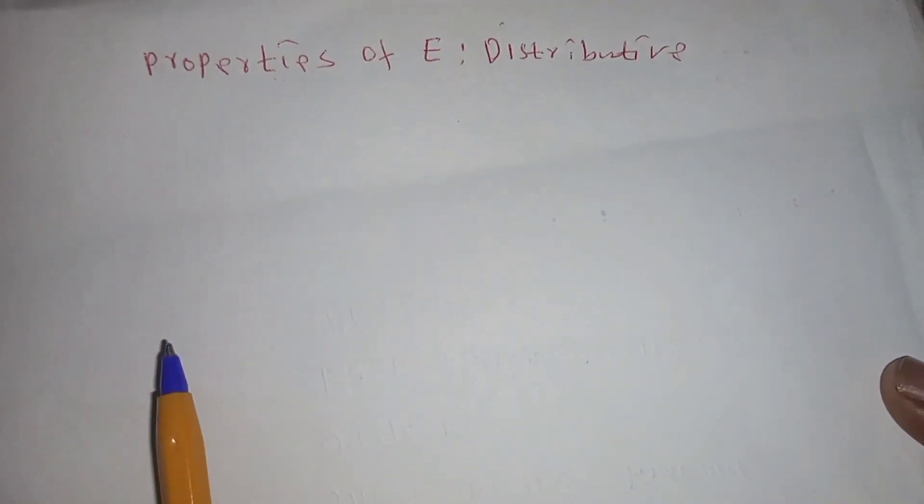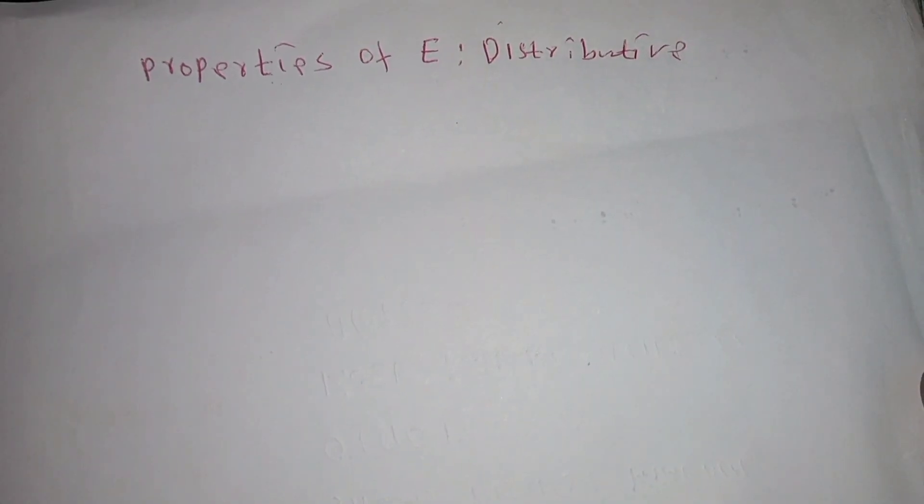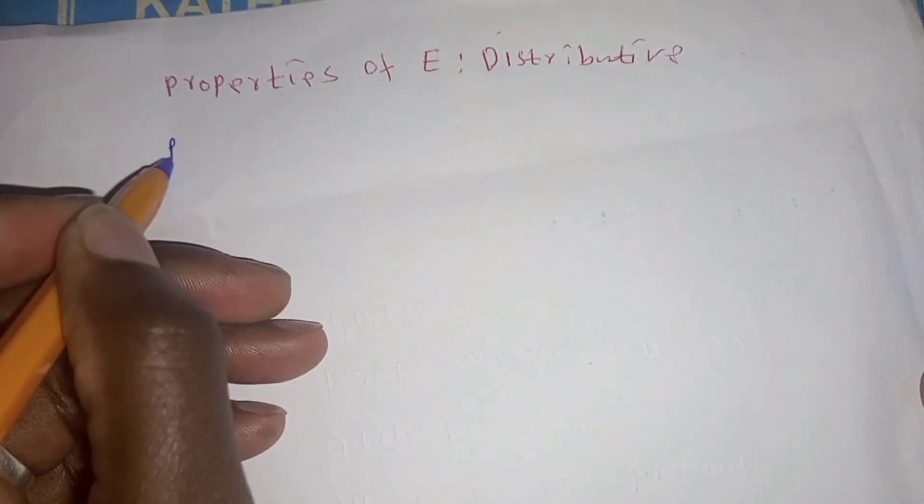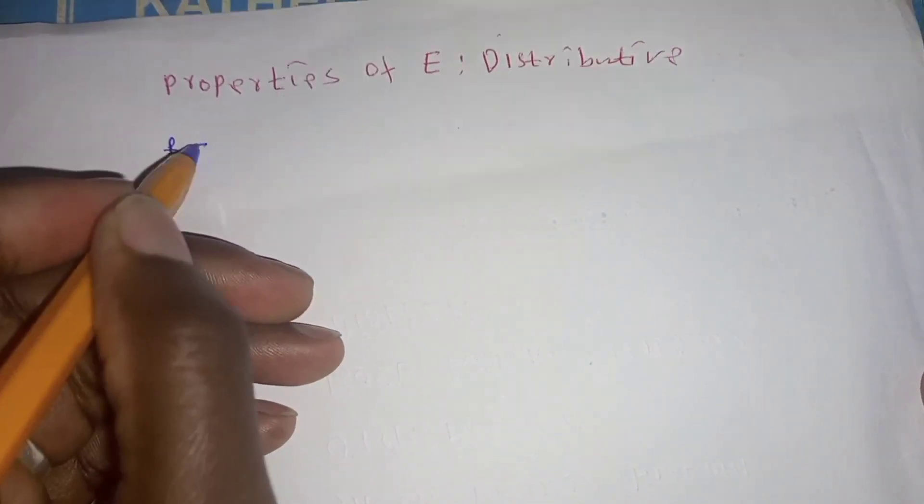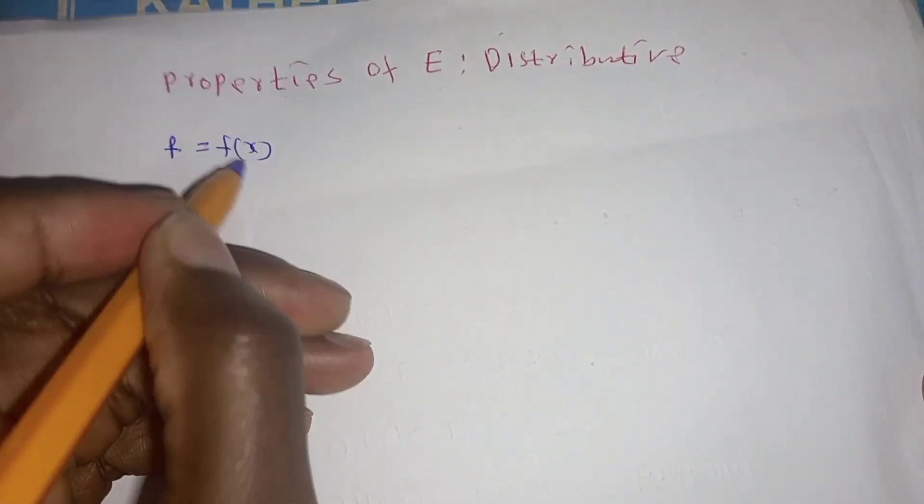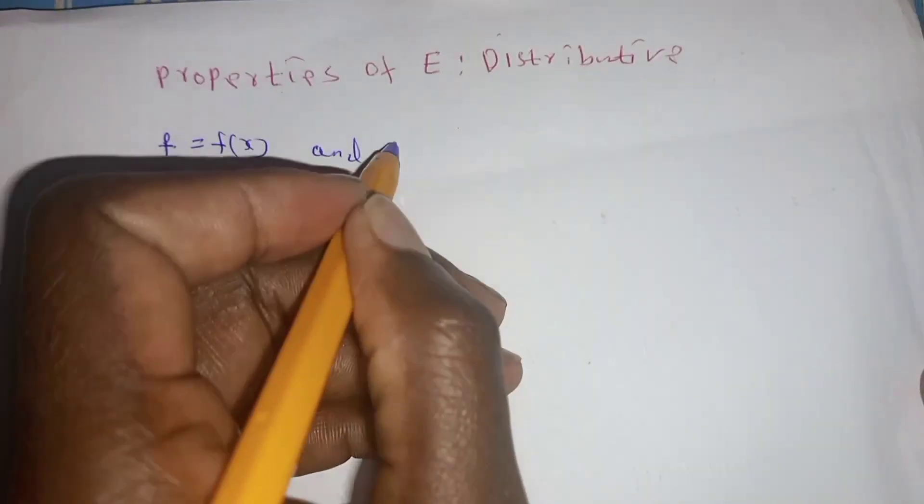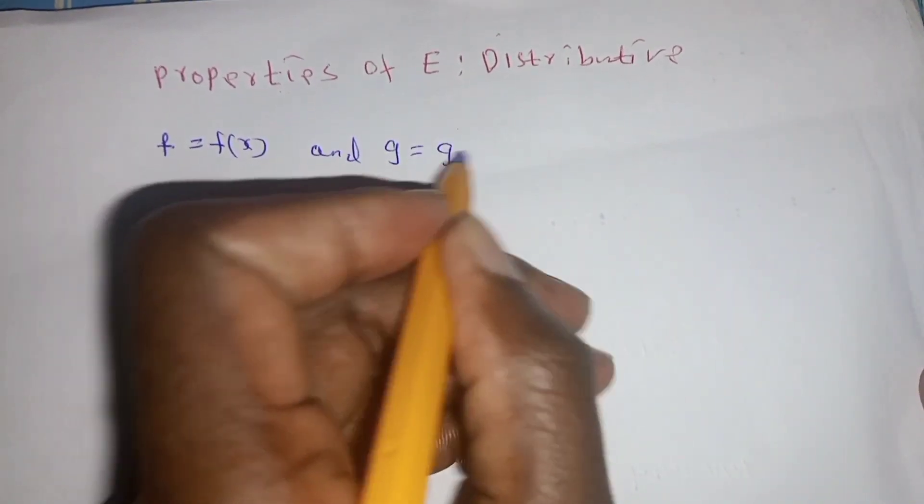So today's property which we want to focus on is the distributive property. The shift operator E is distributive of a function f which is f of x and function g which is g of x.